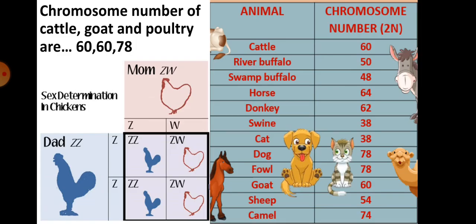The chromosome numbers of cattle, goat, and poultry are 60, 60, and 78 respectively. The maximum number of chromosomes are in poultry. The sex determination pattern is also different in poultry: mammals have XX for female and XY for male, whereas in chickens the male is ZZ and the female is ZW — meaning different chromosomes are in the female and the same type in the male.